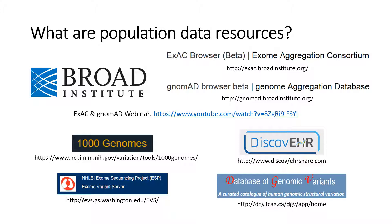When considering all of the different resources that are out there, two of these that are listed are particularly unique. The DiscoverEHR cohort represents individuals who receive medical care from a particular health system, so it is not intended to represent only healthy individuals. And the Database of Genomic Variants contains copy number variant data from control datasets, which can be useful for assessing microarray results or considering the potential impact of a variant in a gene of uncertain significance. If you are interested in using any of these databases, I encourage you to familiarize yourself with them and consider the various questions I have previously outlined.